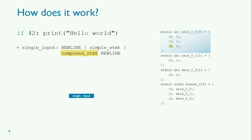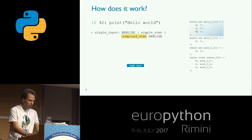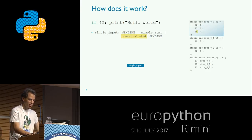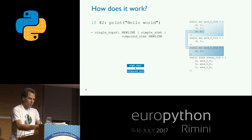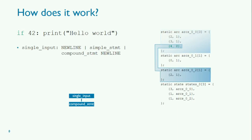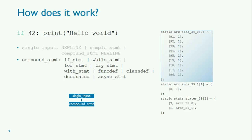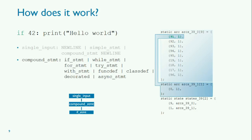We are looking at the if token in the input. According to the start sets, simple statement cannot begin with if, if is not a newline, but compound statement can begin with if. So we transition along the last arc, add the compound statement node to the parse tree, and switch to the new DFA which parses compound statements. For compound statement, we have nine options in the initial state. Only the first arc, which is for if statement, can start with an if token. So we add the if statement node, transition along this arc, and switch to the DFA which parses if statement.